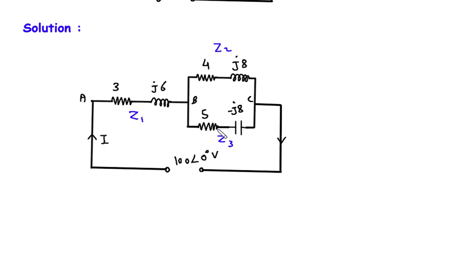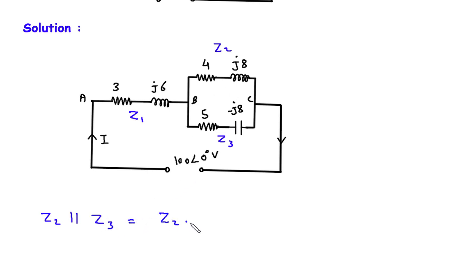Now as we can see, Z2 and Z3 are connected in parallel. So Z2 parallel with Z3 will be Z2 into Z3 divided by Z2 plus Z3.